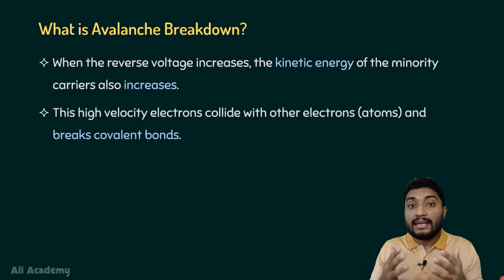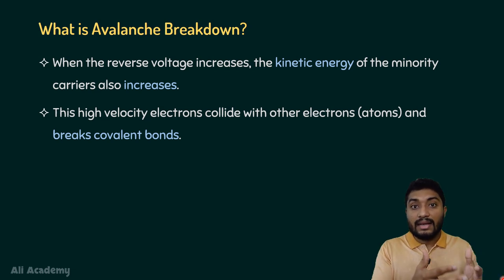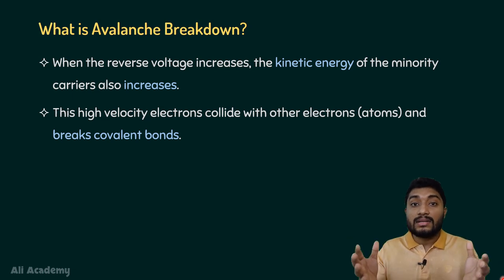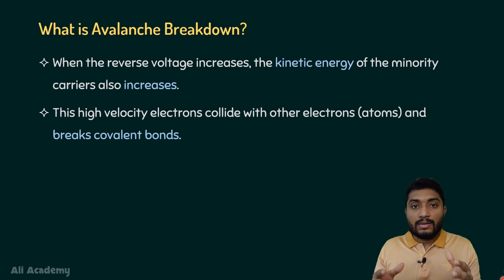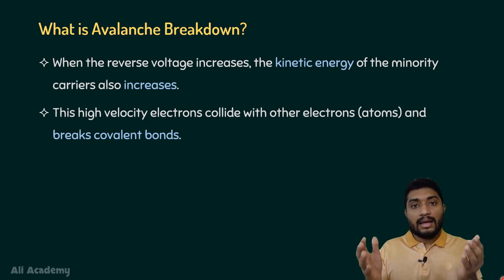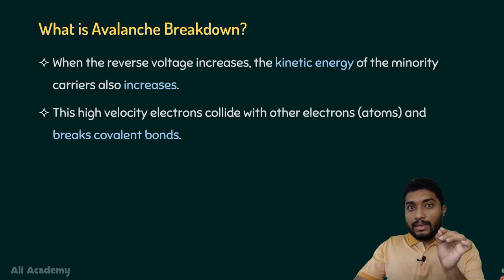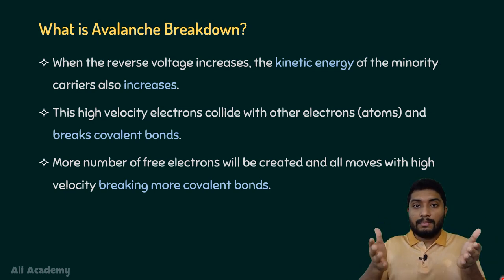Now, when the kinetic energy of this small number of electrons increases, these electrons travel at high velocity and bombard the atoms. They will collide with the other atoms or other electrons and make those electrons free electrons by breaking the covalent bond. So, basically, these free electrons — minority charge carriers — travel at high velocity and collide with the material atoms, breaking the covalent bond to release more electrons. This is an important point when discussing avalanche breakdown.